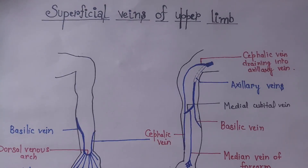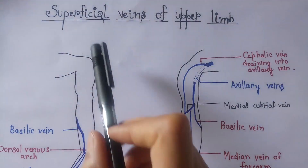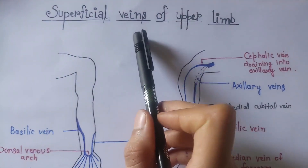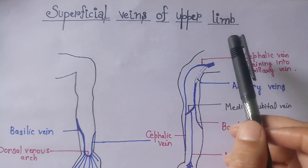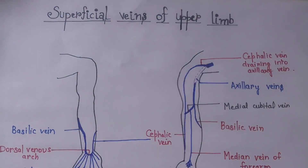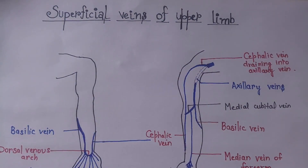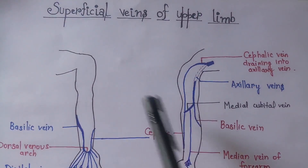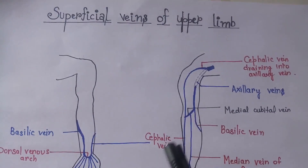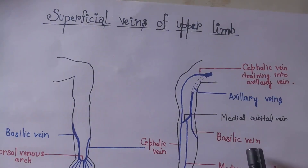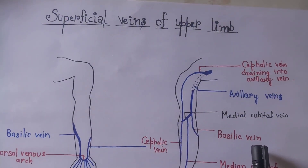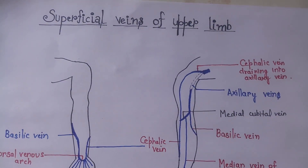In this video we are going to talk about superficial veins of the upper limb. These are very important because they are most commonly used for IV injections and to collect blood samples.